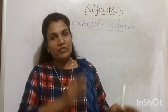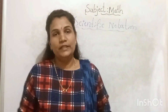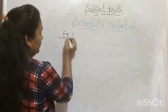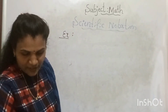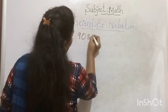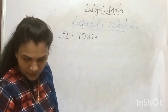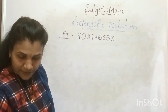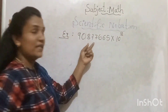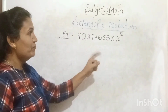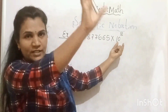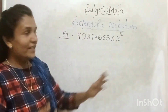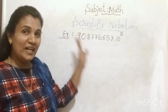Sometimes they may ask: represent the given number in standard form, where the number is already given in exponential/scientific form. Here is an example: 9.0877665 × 10⁸. We need to represent this in standard form. First, leave the 10⁸ aside, and deal with the number 9.0877665 — express it in scientific notation first, then multiply the powers.